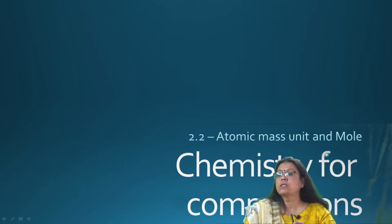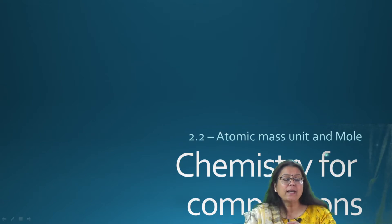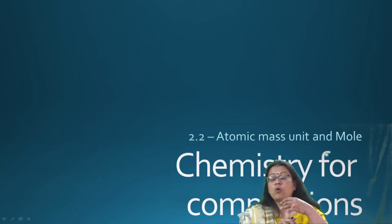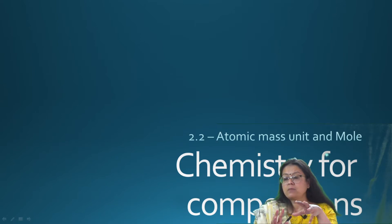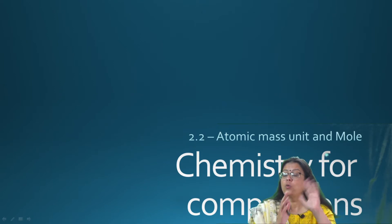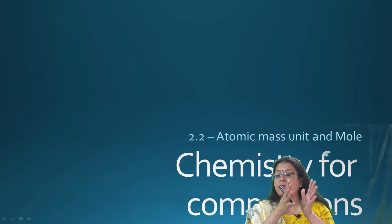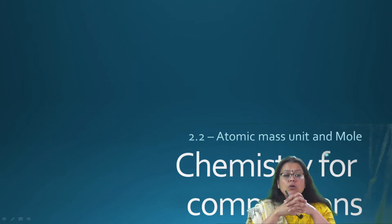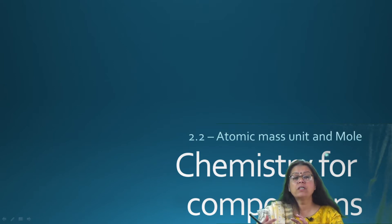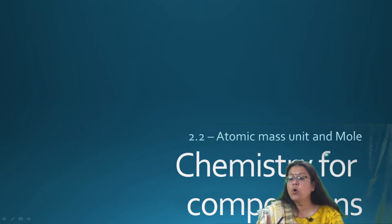So share these videos with your friends and have a competition amongst yourselves. We are doing Chemistry for Competitions, and we are going on to 2.2. In 2.1 we did the mole concept overview. We finished chapter one where we covered measurements, graphical analysis, fundamental units, and derived units. All of that has already been done.